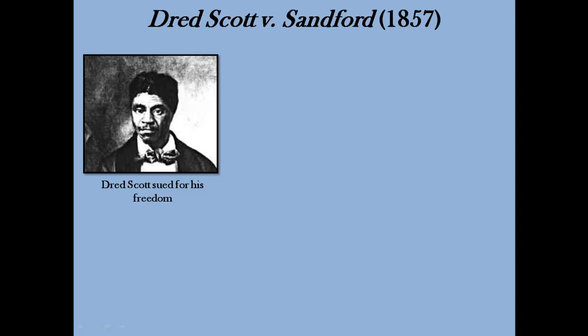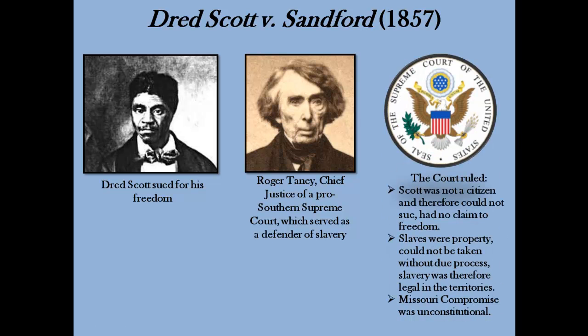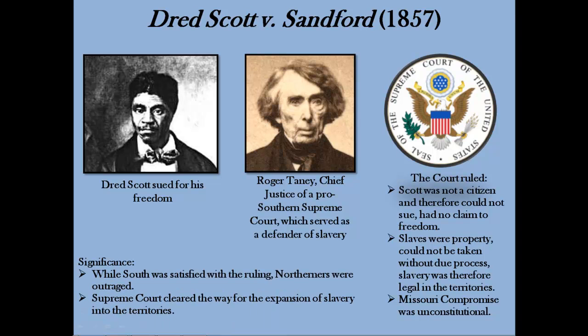The Supreme Court also played a role in the increasing divide between North and South. Dred Scott was a slave who sued for his freedom after his owner took him into a free territory. The Chief Justice at the time was Roger Taney, who presided over a Supreme Court controlled by Southerners. In the decision, Taney said that as a slave, Scott was not a citizen, thus he had no right to be in court in the first place and had no claim to freedom. Taney continued by ruling that Congress had no right to prohibit slavery in a territory, as slaves were property — this made the Missouri Compromise unconstitutional. This was the first time the Supreme Court had used the power of judicial review since the Marbury v. Madison case in 1803. Southerners loved the ruling as slavery was now legal in all territories, while Northerners were outraged. By 1857, the tension between North and South was reaching its boiling point.